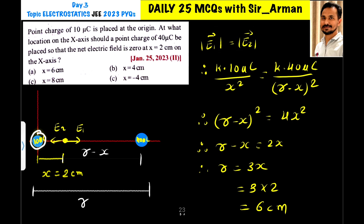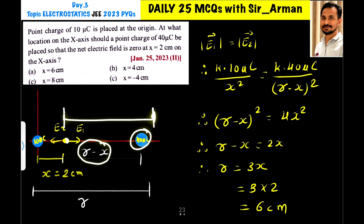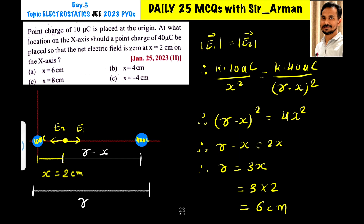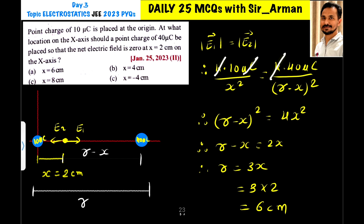E1 is the electric field produced by the 10 microcoulomb charge; the point is at distance x from it, so E1 = kQ1/x². Here Q1 is 10 microcoulombs. E2 is the electric field due to the 40 microcoulomb charge, which is at a distance of r minus x from the point, so E2 = kQ2/(r − x)².